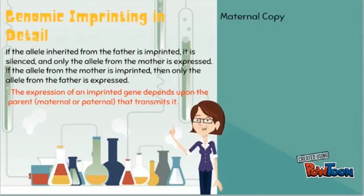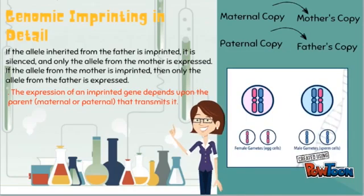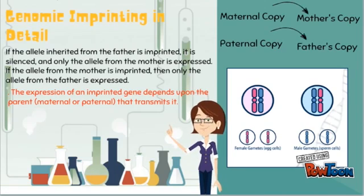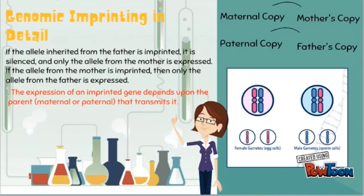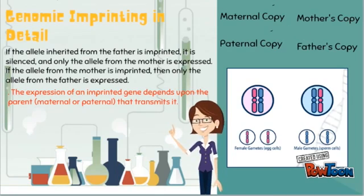Genomic imprinting is a form of epigenetic inheritance where the regulation of a gene, or chromosomal region, is dependent on the sex of the transmitting parent. During gametogenesis, imprinted regions of DNA are differentially marked according to the sex of the parent, which results in parent-specific expression. If the allele inherited from the father is imprinted, it is silenced, and only the allele from the mother is expressed. And if the allele from the mother is imprinted, then only the allele from the father is expressed.